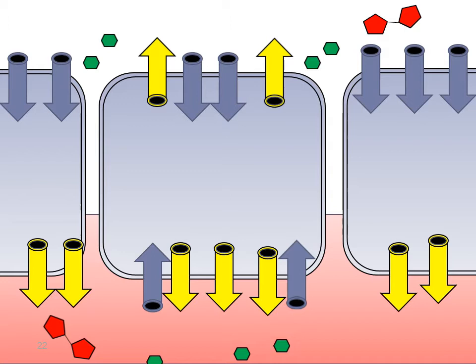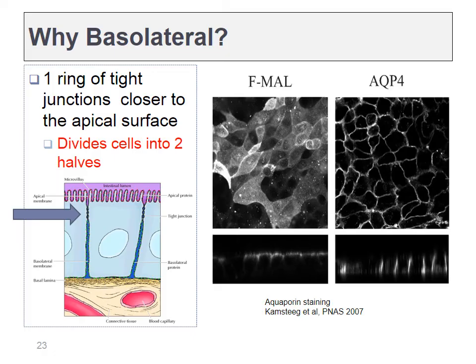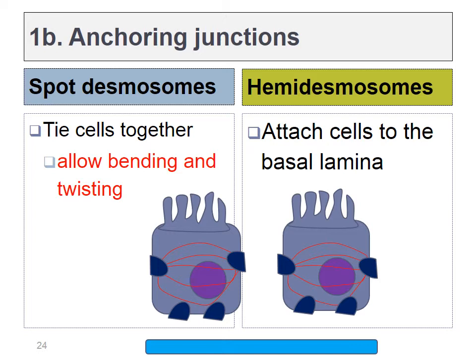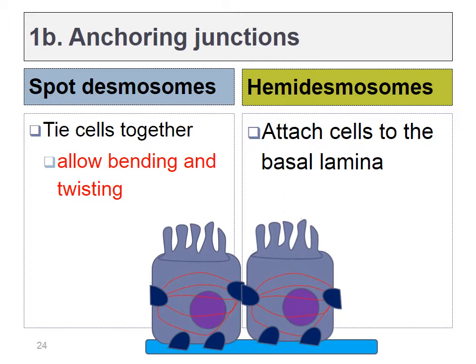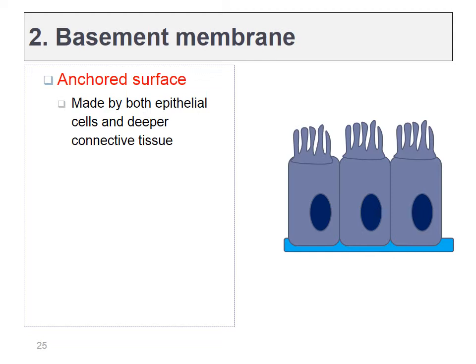The name basolateral comes about because tight junctions are only up near the apical surface, forming the barrier between the two sides. Any protein on the lateral surfaces could just as easily be found on the basal surface — so we say basolateral for below the tight junctions and apical for above. Anchoring junctions come in two flavors: spot desmosomes between two cells, or hemidesmosomes anchoring cells down to the connective tissue below.